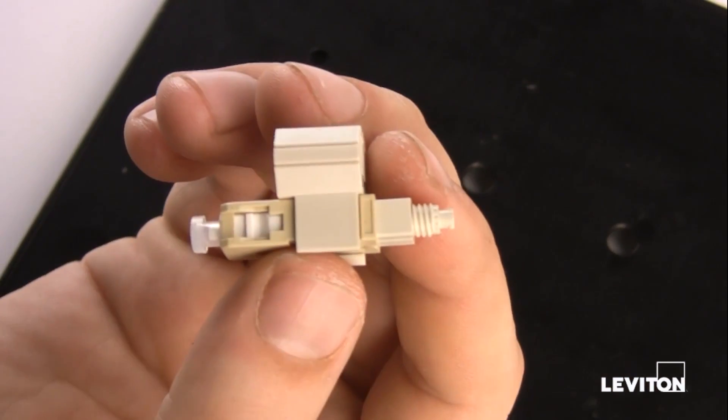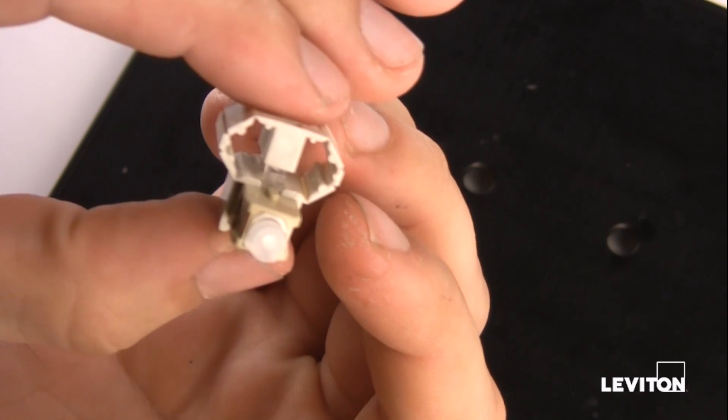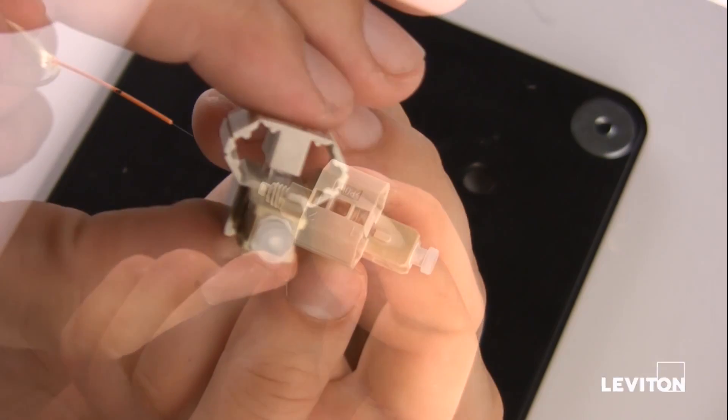The wedge clip on your connector comes pre-installed. If it has become dislodged, squeeze the top and bottom, ensuring the clip is inserted into the connector body.